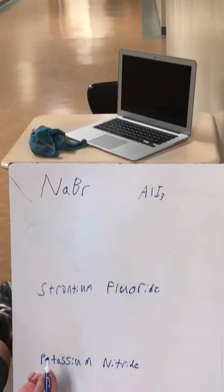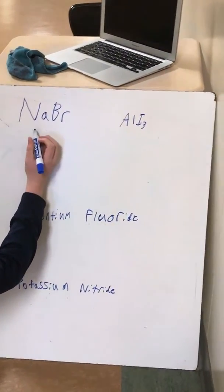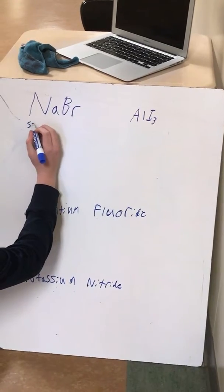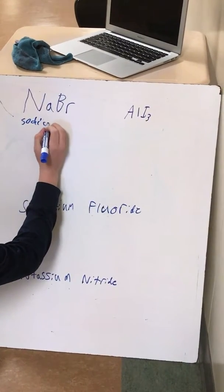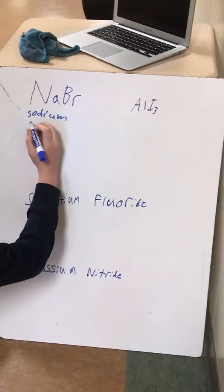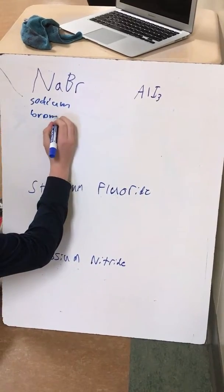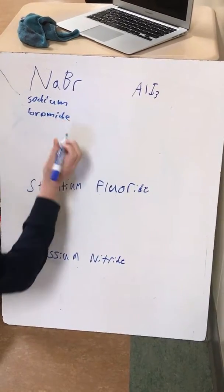We're going to show you how to name and write formulas for ionic compounds. For this one, the first ion here is sodium, so we just write sodium. The next element is bromine, but since it's in an ionic compound it would be bromide - we just add 'ide' to the end of it.